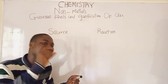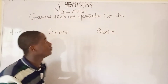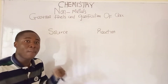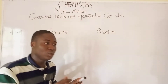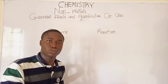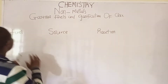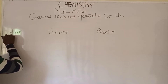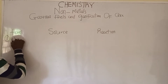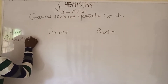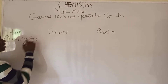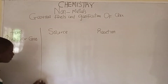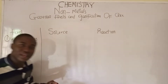Gasification of coke is used for making gaseous fuels used for domestic and industrial heating. Examples of gaseous fuels include water gas. Let's talk about water gas — this is an important example of a gaseous fuel.